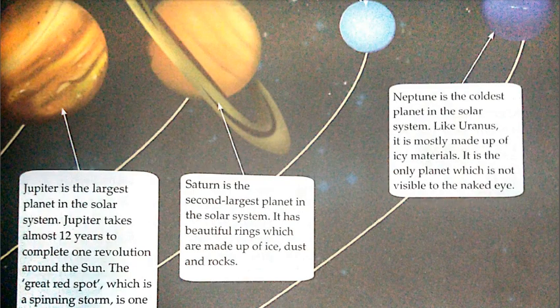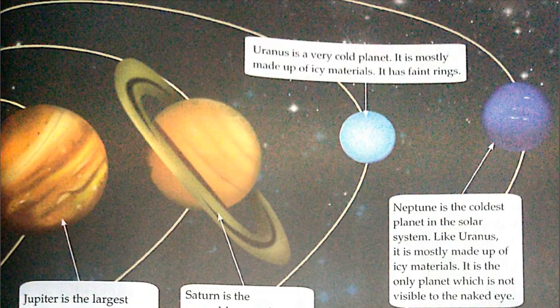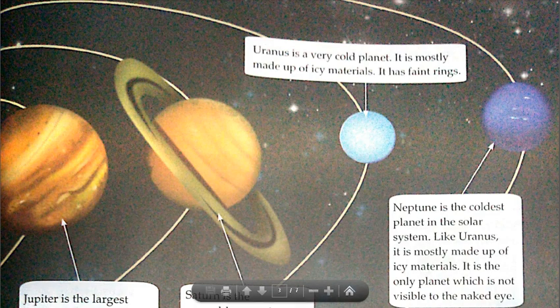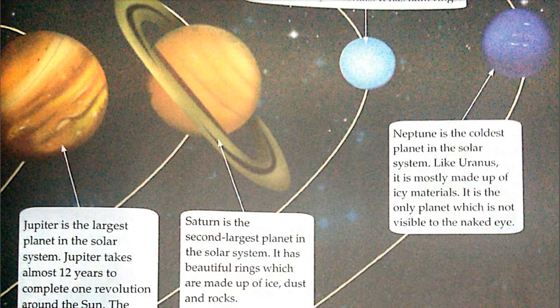Saturn is the second largest planet in the solar system. It has beautiful rings which are made up of ice, dust, and rocks — aap dekh sakte honge ki iske kinare-kinare rings bani hui hain jo bahut hi beautiful hain.